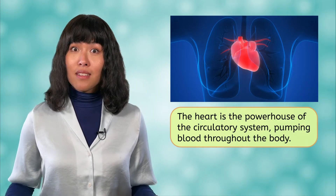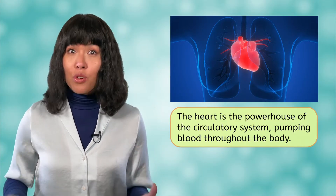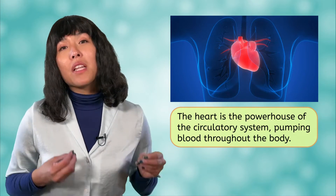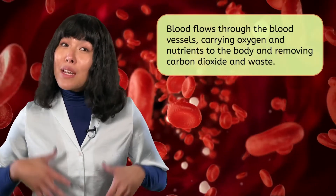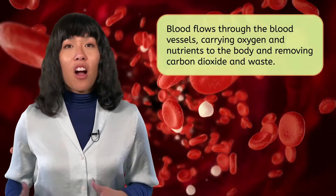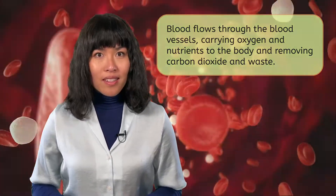The circulatory system is found in every part of the body, from your fingertips to your heart, but is made of only three main structures. The heart is the powerhouse of the circulatory system, pumping blood throughout the body. The blood vessels are like the roads and highways for the blood, so that it can move throughout the entire body, bringing oxygen and nutrients, and removing carbon dioxide and waste.